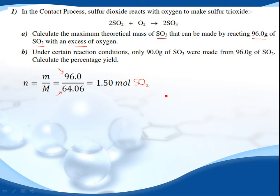Next we look at the ratio of SO2 to SO3, and it's a one-to-one ratio. That means we will have 1.50 moles of SO3 because it's a one-to-one ratio.